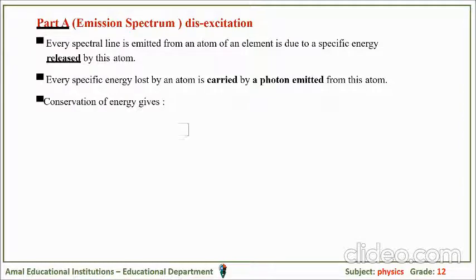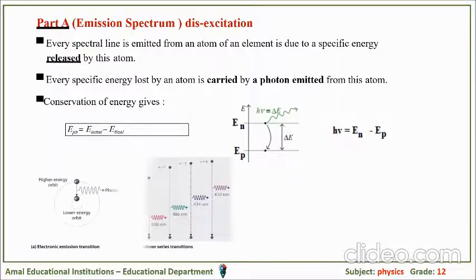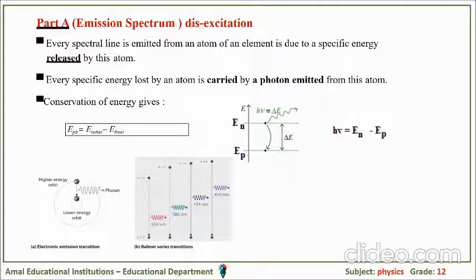By conservation of energy, the energy of the photon equals the initial energy minus the final energy: E_photon = E_initial − E_final. The atom falls from a higher energy level down to a lower one, losing energy and radiating a photon. The energy of the photon is the difference between the energies of the two levels. For example, the hydrogen atom falling from level n down to level 2 emits a photon of wavelength 656 nm or 486 nm, and so on.